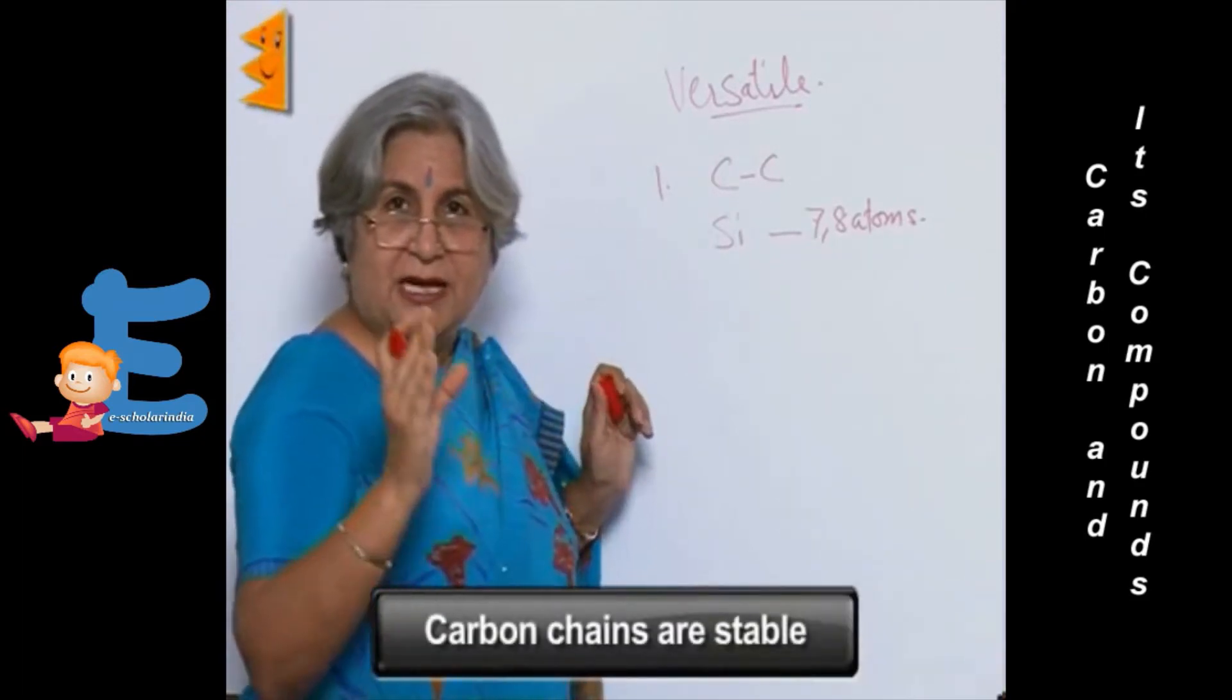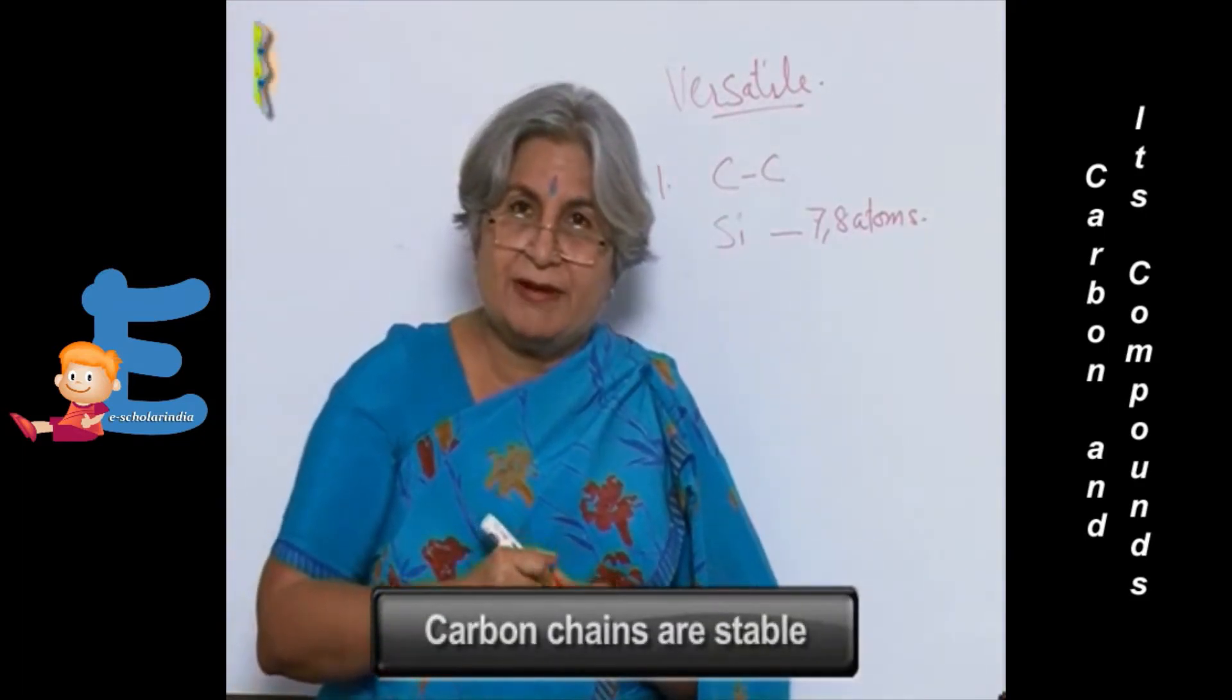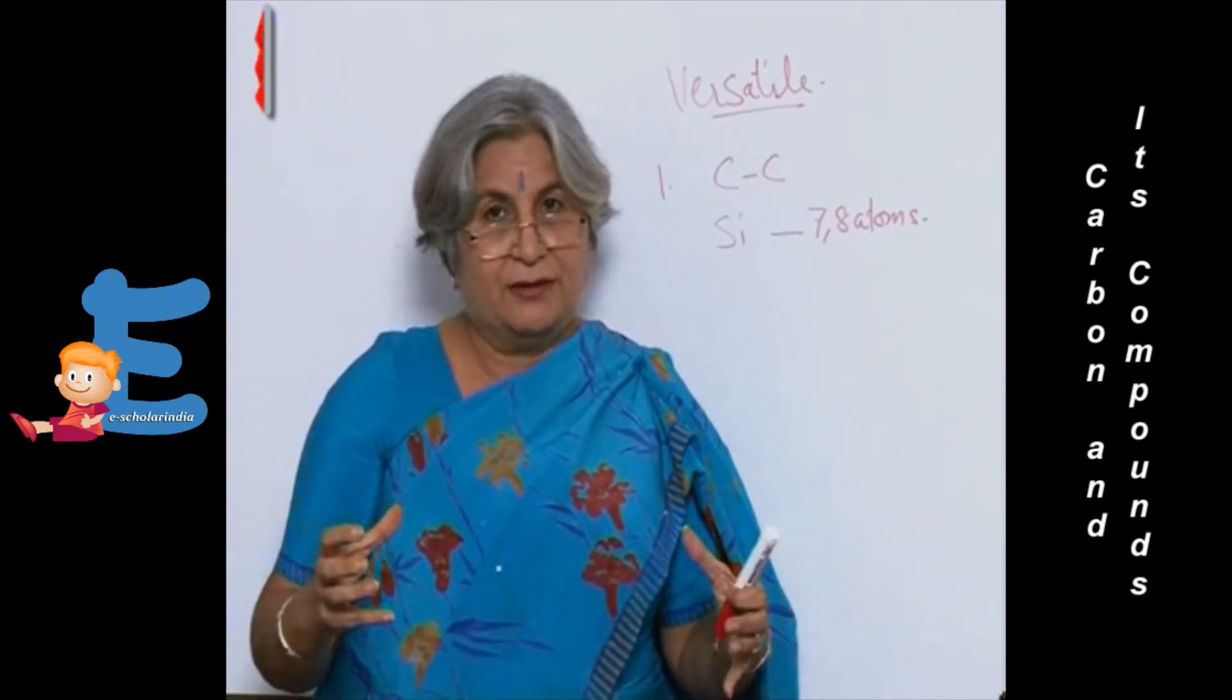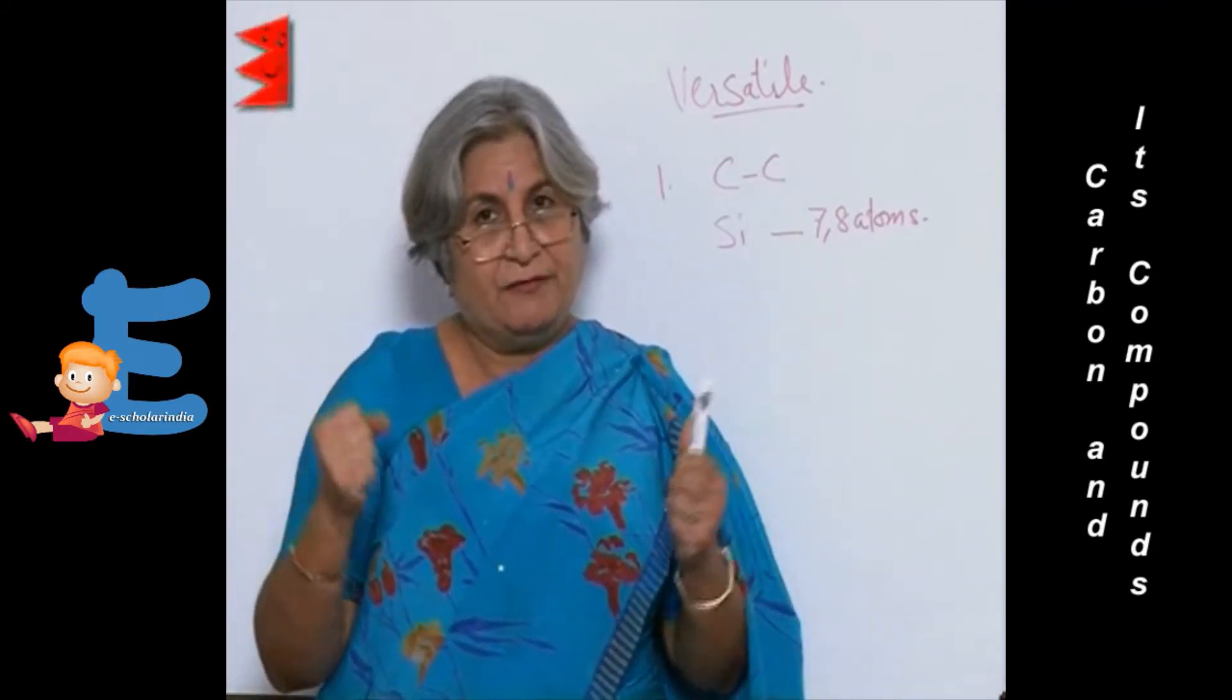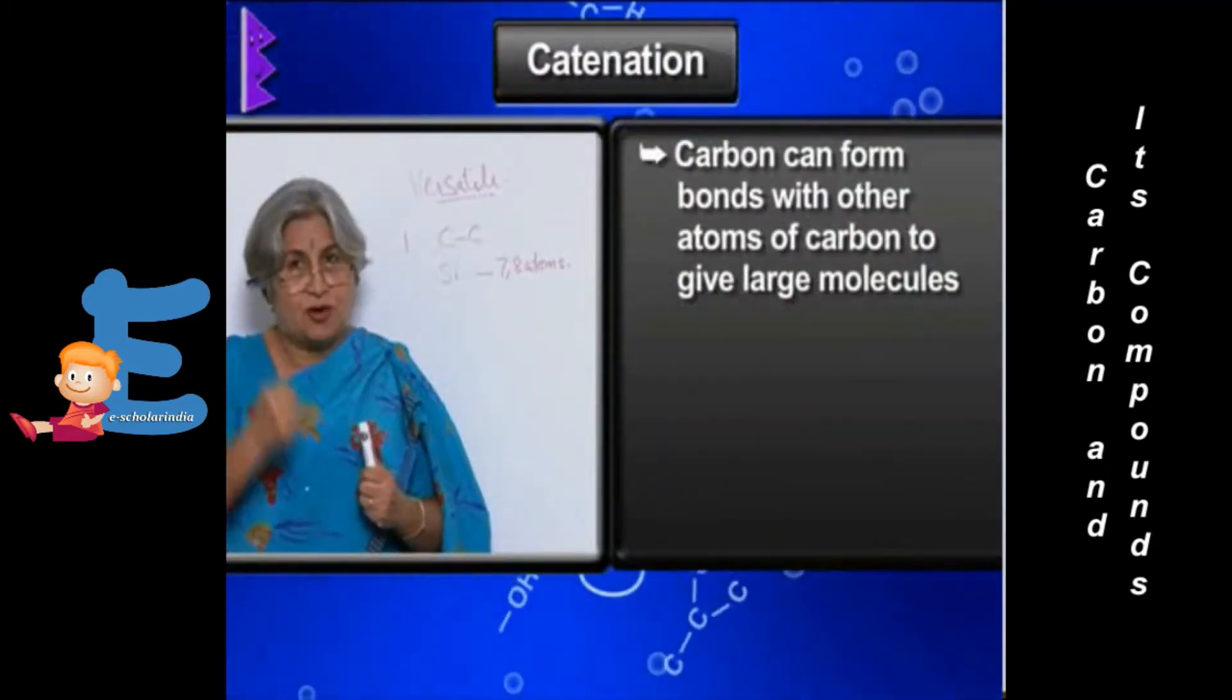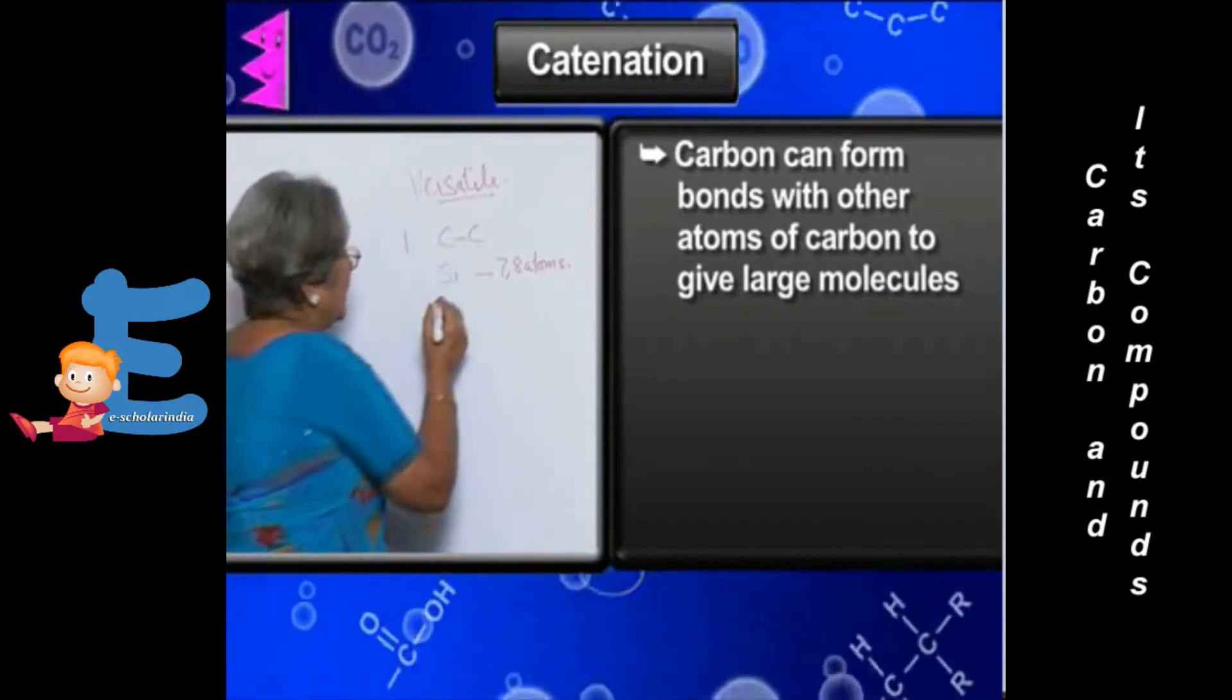Why are carbon chains stable? Isn't it something like our own country? In our country also we are all bound together. We may be otherwise different, but we are together, always together. This property of having a strong bond is called catenation.